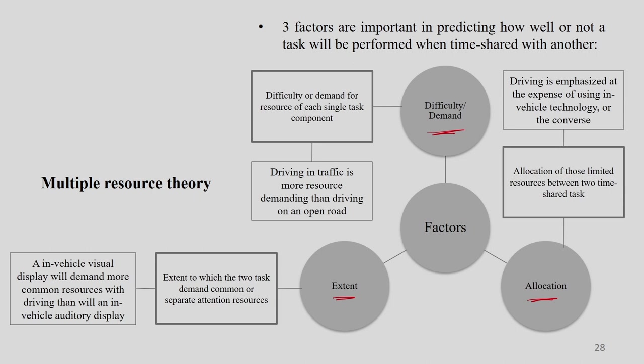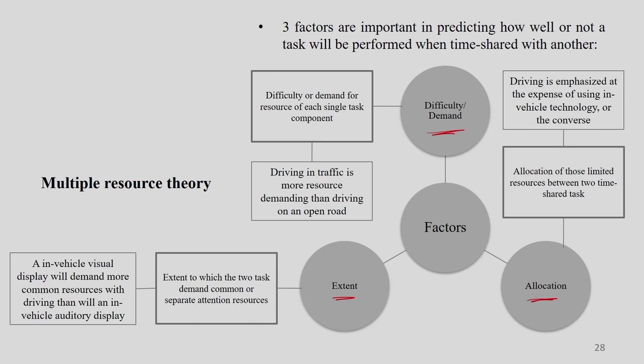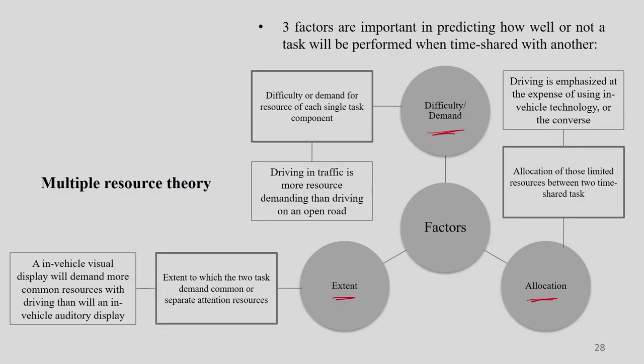When talking about difficulty or demand, it refers to the demand for resources of each single task component — not all tasks simultaneously, but each single task. For example, driving in traffic is more resource-demanding than driving on an open road, because you need visual, skill, auditory resources, background understanding — everything is required. You need to perceive speed, understand signals, everything. Whereas on an open road, there is less demand.